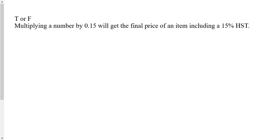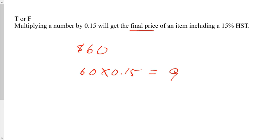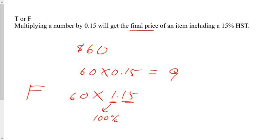Question two says: multiplying a number by 0.15 will get the final price of an item including 15% HST. Let's say that $60 item again. If I multiply $60 by 0.15, I'm going to get nine. Is nine the final price? No. Nine is just the tax. So the answer is false. In order to get the final price, you have to multiply 60 by 1.15, because multiplying by 1 gets you 100%, and multiplying by 0.15 gets you the 15% tax.